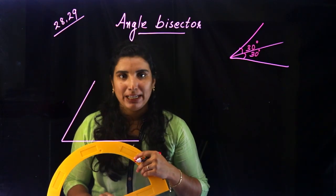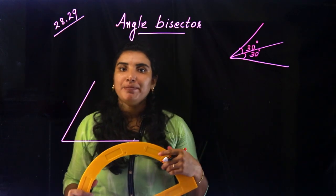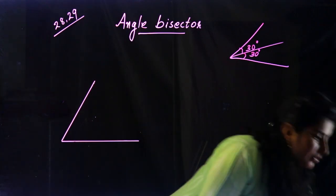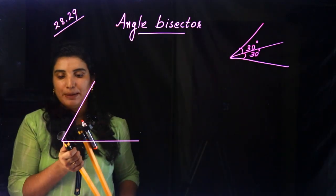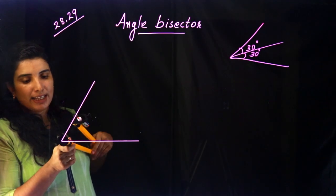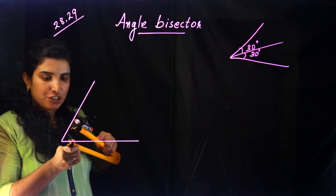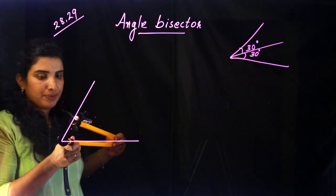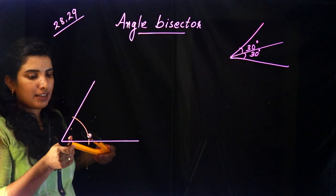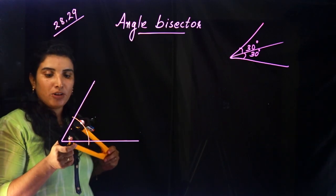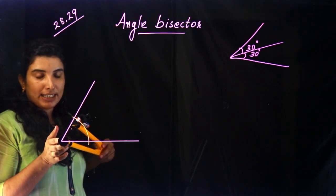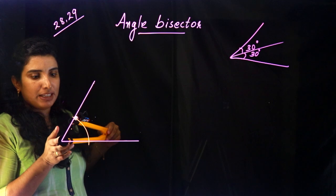Now, what we are going to do — this angle is going to use a compass. This compass point is correct. This angle is here. We will place the compass and then place an arc. Let's move this angle down. You can see that one angle and the point. We will place the angle at the corner.